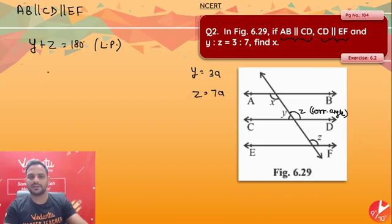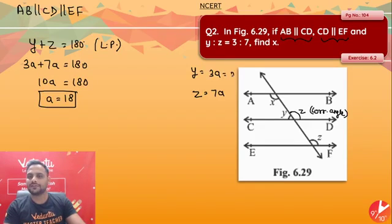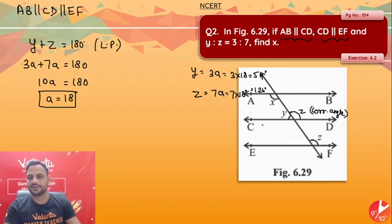So 3a plus 7a equals 180, which gives 10a equals 180, meaning a equals 18. Therefore, y will be equal to 3 into 18, which equals 54 degrees. And z will be equal to 7 into 18, which equals 126 degrees.